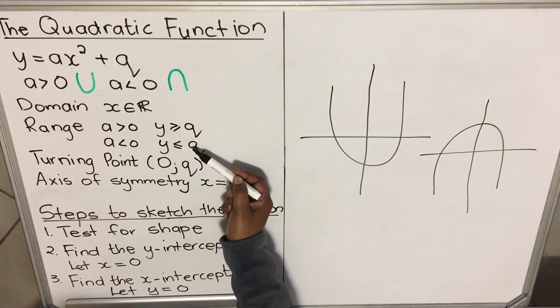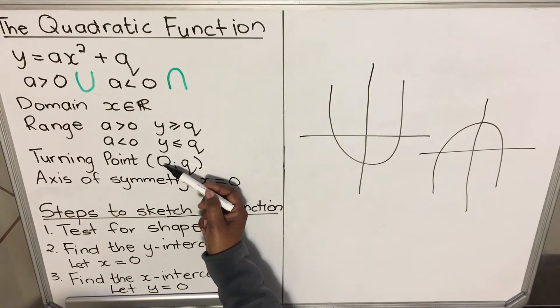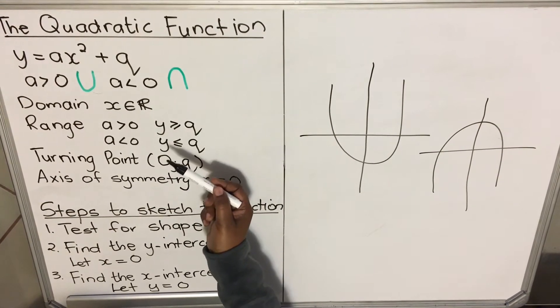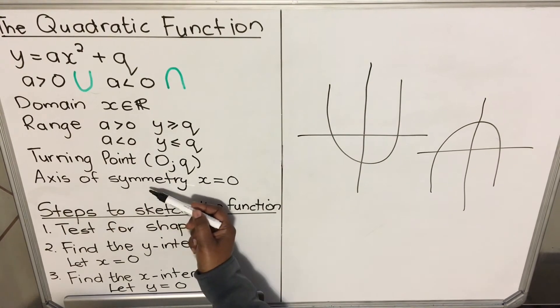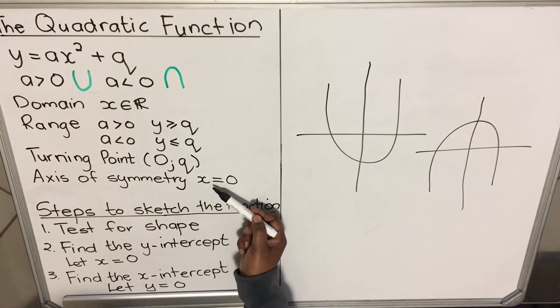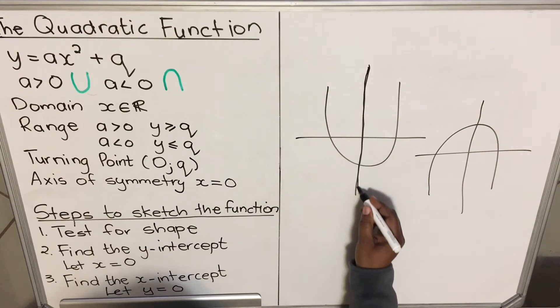Then the turning point of this function is always zero and q. This is grade 10—in grade 10 you only get this one. The axis of symmetry is the equation x equals zero. The axis of symmetry is the line that cuts the graph into two equal parts.